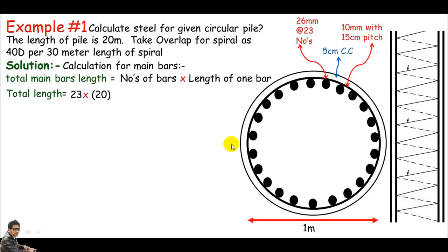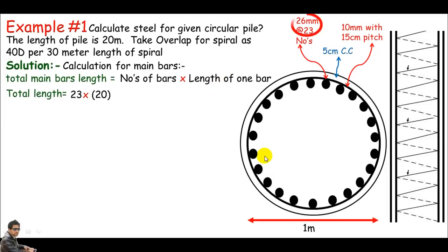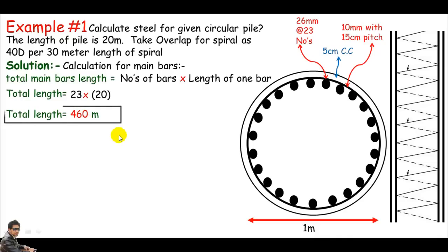We are not informed by the designer to take extra length for hooks, so this is quite simple. You must get the total length for main bars as 460 meters. When I have the total length, I can easily calculate its weight.